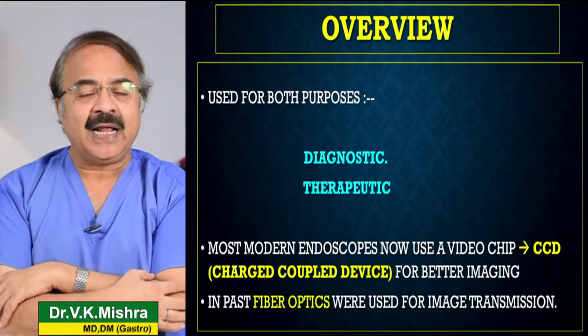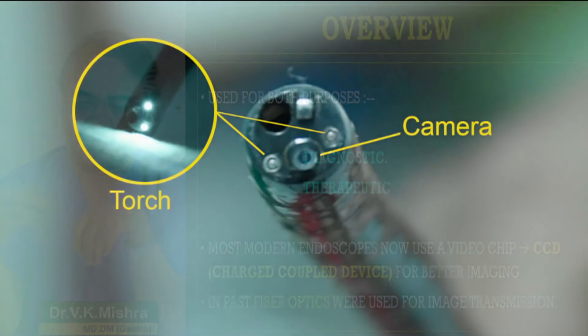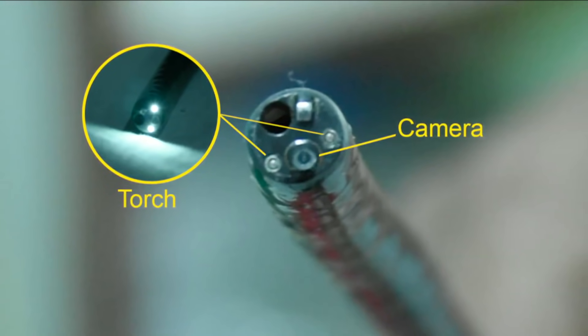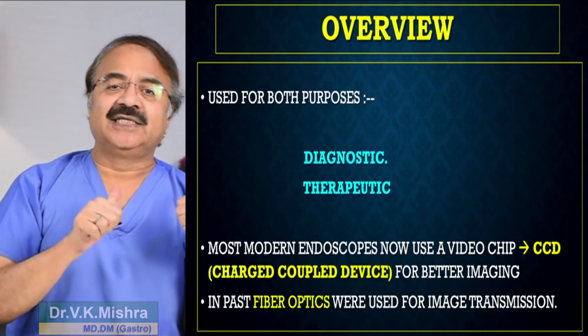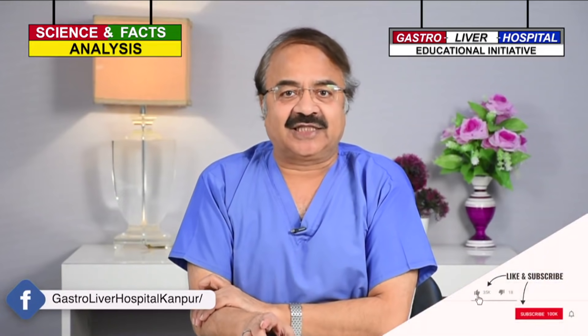जहां तक endoscope का सवाल है, जैसा मैंने कहा, these are very sophisticated instruments। इनकी जो tip होती है, उस पर एक CCD camera होता है जिसे कहते हैं charged coupled device — यह बहुत sophisticated camera है जो हमको digital images देता है जो बाहर के monitor पे आती हैं। इससे पहले, आज से करीब 25 साल पहले, endoscope में fiber optic cable होता था जिसके थ्रू image बाहर आती थी। Fiber optics की image की quality ठीक होती थी, लेकिन इतनी sharp, इतनी अच्छी और इतनी clear नहीं होती थी जितनी CCD camera से आज की तारीख में अंदर की images मिलती हैं।